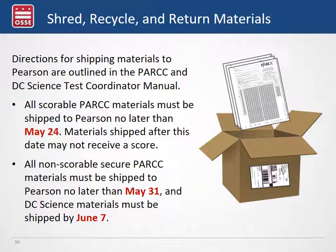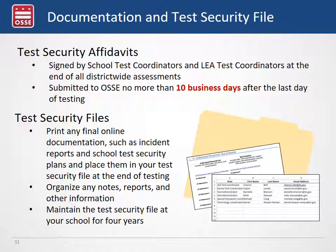Scorable materials must be shipped back to Pearson no later than May 24th — this applies only to Park scorable materials. All non-scorable materials must be shipped by May 31st for Park and June 7th for DC Science. For documentation, OSCE needs test security affidavits due 10 business days after the last day of testing, plus completion of the test security file documenting any issues, incidents, reports, or changes that occurred.